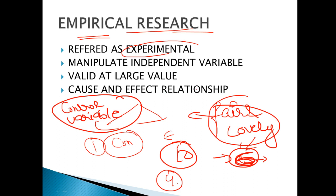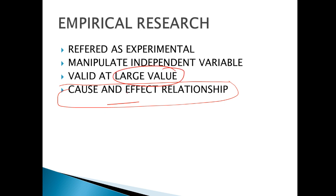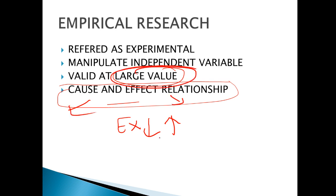So there are two types of variables in experimental research. Additionally, empirical research also shows a cause and effect relationship, and it is carried out on a large scale. For example, studying how the dollar appreciating or depreciating affects the Indian export industry — that is studying the cause and effect of something at a large level.